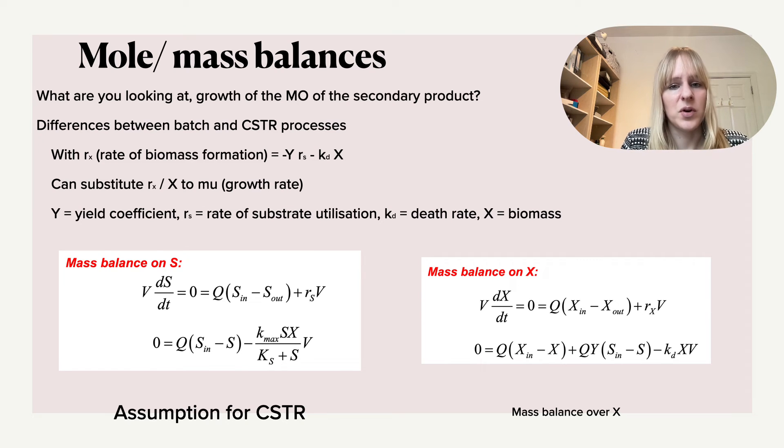Now, again, if we want to look at the mass balance on X, so this is on the biomass, we presume that in total there's no accumulation either, so this should be zero. And here you will see that this comes in, we have biomass in, biomass going out. We also have substrate going in, substrate going out. Q stands here for the flow that comes in.